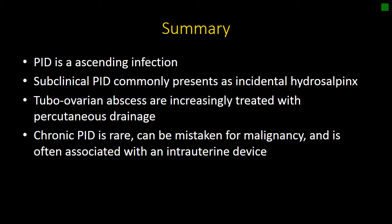Regarding tubo-ovarian abscesses, while IV antibiotics were previously first-line treatment, percutaneous drainage is now recommended depending on size. There is good data that anything over 10 centimeters should be drained, but even abscesses of 8 and 5 centimeters have shown evidence of benefit when drained primarily, in conjunction with IV antibiotics.